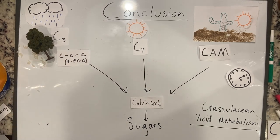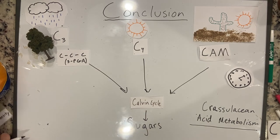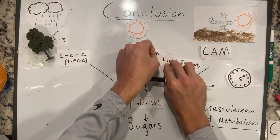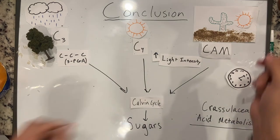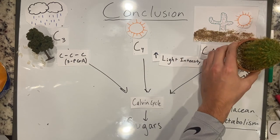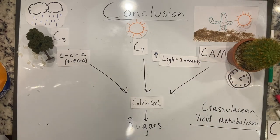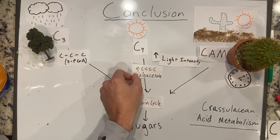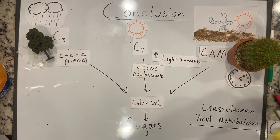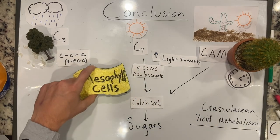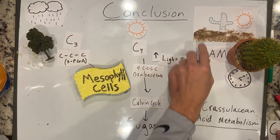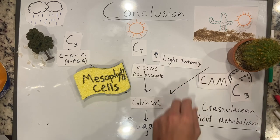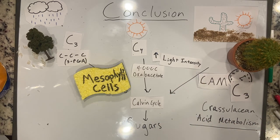C4 plants work efficiently in hot areas that have high light intensity, and CAM plants work ideally in very hot, dry areas. C4 photosynthesis gets its name from the four-carbon molecule oxaloacetate produced in the mesophyll cells. C4 is different from C3 in space, while CAM is different from C3 in time. CAM gets its name from the pathway it undergoes — Crassulacean acid metabolism — that minimizes photorespiration.